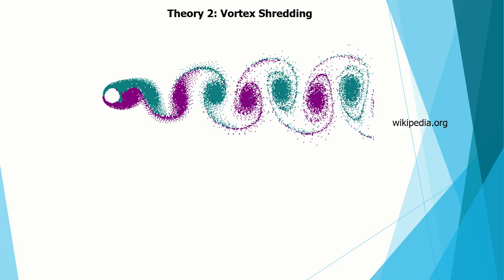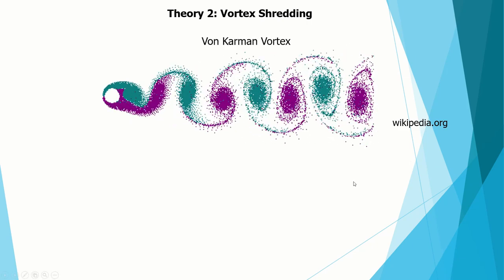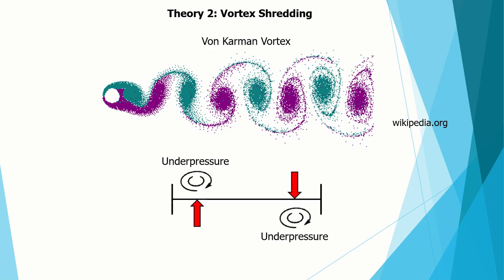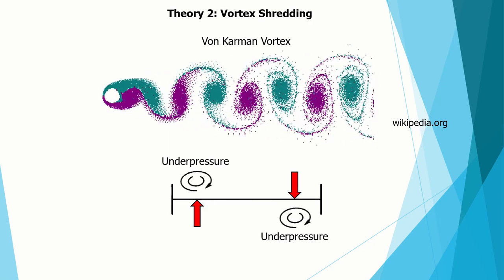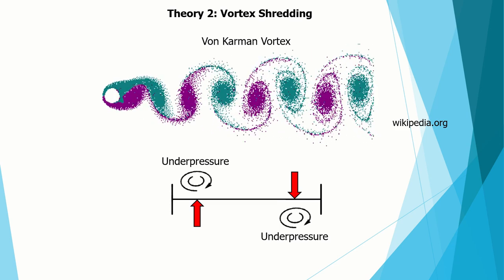Another theory is vortex shedding. Vortices occurred close to the main girders, leading to under-pressure at the top-left and also at the bottom-right of the bridge deck, which would rotate the deck and hence amplify its motion. However, this theory is also considered unlikely, since the vortices occurred at a frequency of 1 Hz while the torsional eigenfrequency of the bridge was only 0.2 Hz.